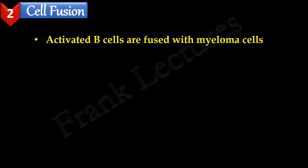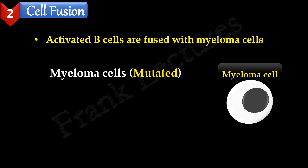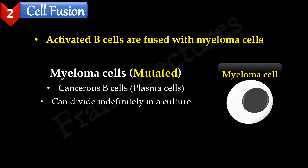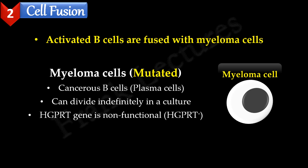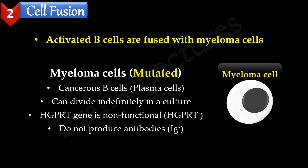The next step is cell fusion. B lymphocytes have a short lifespan in cell culture, so in this step, activated B lymphocytes are fused with myeloma cells. Here we need to note that these myeloma cells being used are mutated myeloma cells. Myeloma cells are cancerous B cells — they can divide indefinitely in culture. But their two genes are mutated: first, the HGPRT gene, so they are not able to synthesize nucleotides by the salvage pathway. The second gene is the immunoglobulin gene; as a result of this mutation, these myeloma cells cannot produce their own antibodies. These mutations are represented as HGPRT negative and Ig negative.